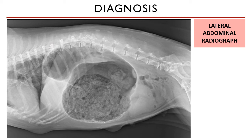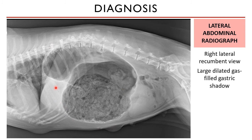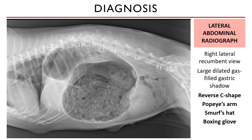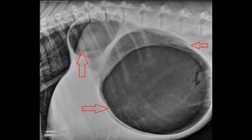What does a GDV look like on x-ray? A lateral abdominal radiograph is taken with the dog in right lateral recumbency. GDV would look like a large dilated gas-filled gastric shadow with the pyloric part shifted upwards. This has been called a reverse letter C or C shape, Popeye's arm, a smurf's hat, a boxing glove, or double bubble — where the double bubble refers to the stomach body and the pylorus.